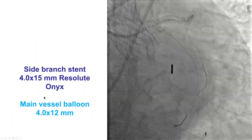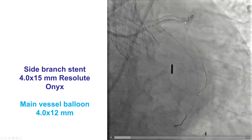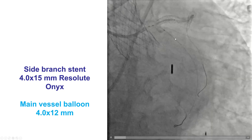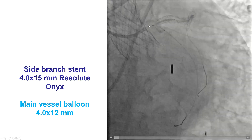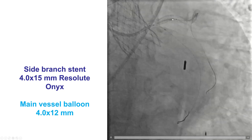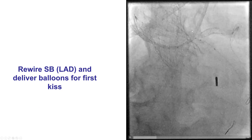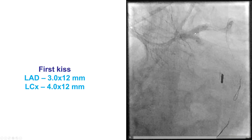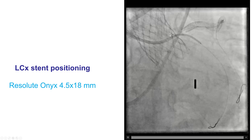These are the 17 steps of DK CRUSH. We decided to use the circumflex as the main vessel and the LAD as the side branch, based on the ease of rewiring — it was easier to get into the LAD than to take the bend that led into the circumflex. The vessel that is easier to rewire is always selected as the side branch. We deployed the stent, crushed it, then rewired and performed the first kissing balloon inflation, which showed good expansion of both balloons. We then placed a 4.5 by 18 mm Resolute Onyx drug-eluting stent from the left main into the circumflex, jailing the LAD.